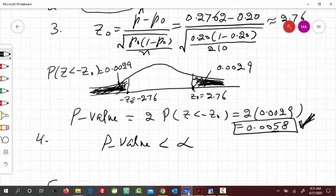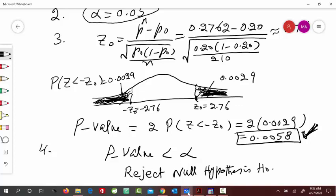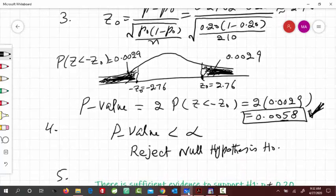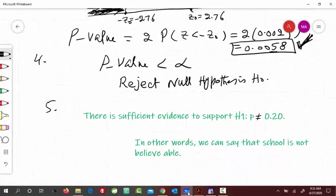If p-value is less than alpha, what we do is that we reject null hypothesis. When we reject null hypothesis, it means that there is enough evidence to support H1. There is sufficient evidence to support H1. And H1 was that p is not equal to 0.20. It means that the women population proportion in that college is not equal to 20%. But their claim was that, you know, their women population is 20%. Then we can, in other words, we can write it or say that, that school is not believable.